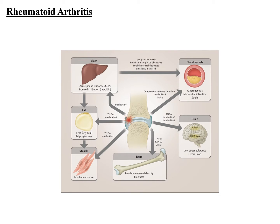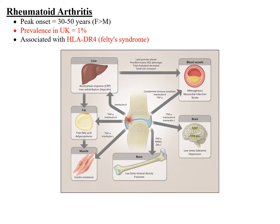Today we will be discussing about rheumatoid arthritis. Rheumatoid arthritis is a multisystemic disease which affects the small joints of the hands. The peak onset is about 30 to 50 years and it is more common in females. The prevalence in the United Kingdom is about 1% and it is associated with HLA-DR4 in about 70%. In Felty syndrome — a combination of rheumatoid arthritis with splenomegaly and neutropenia — the association is much stronger, up to 90%.